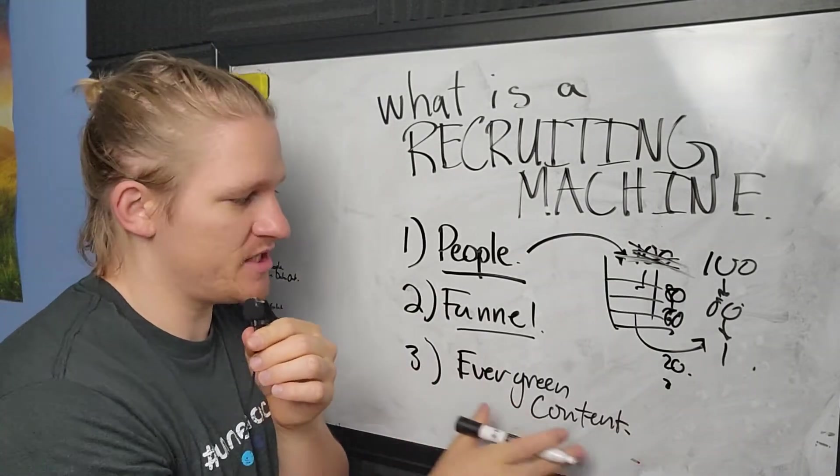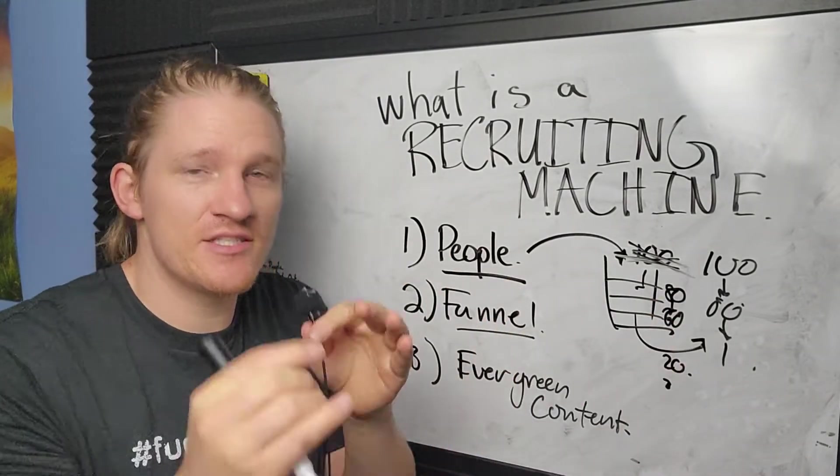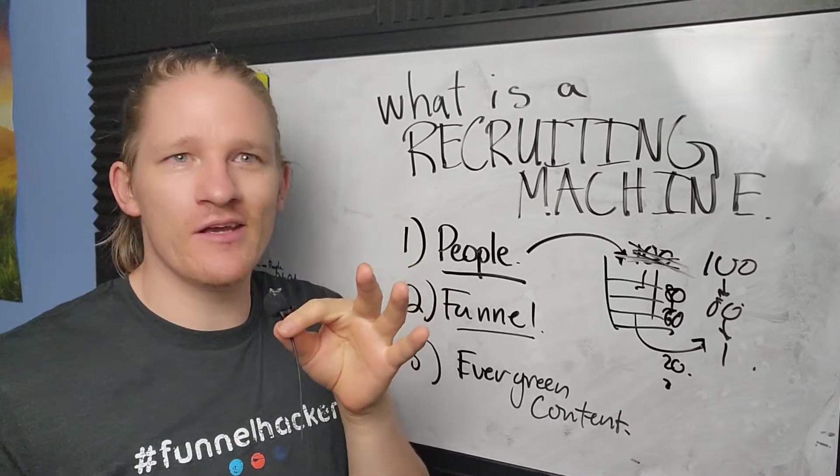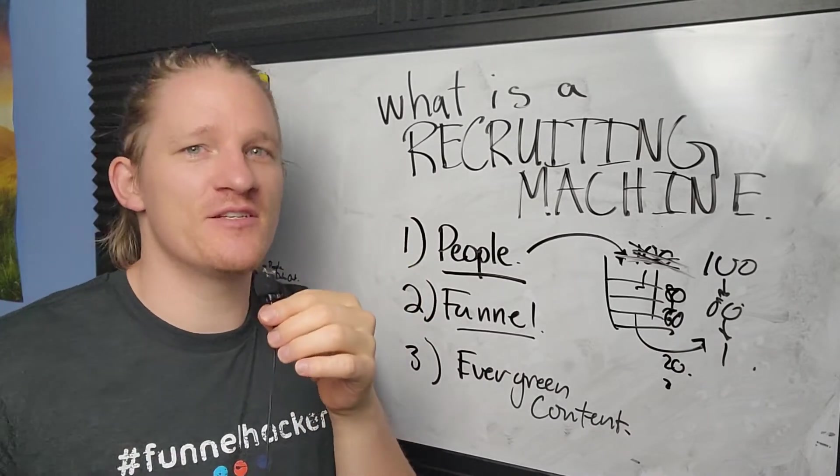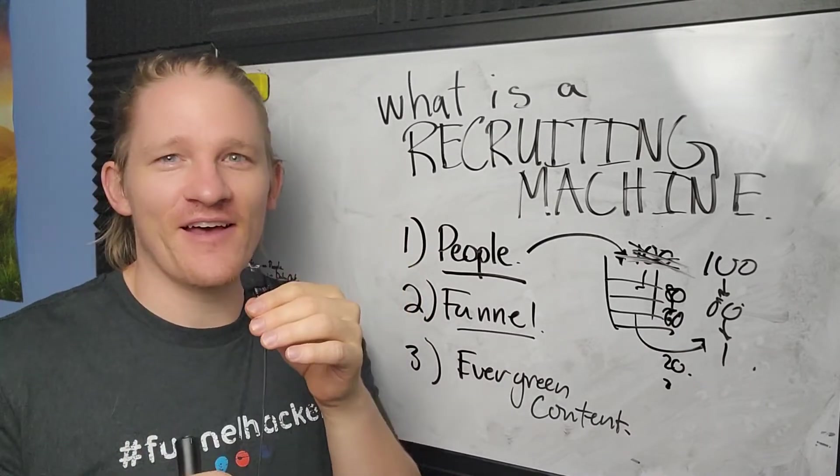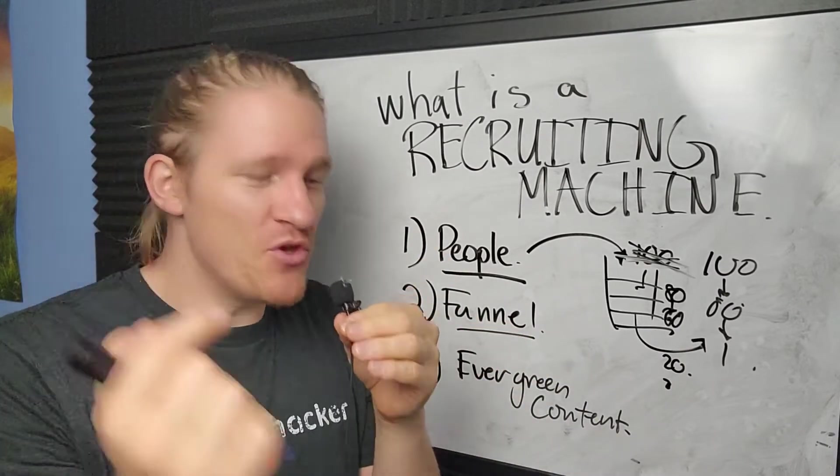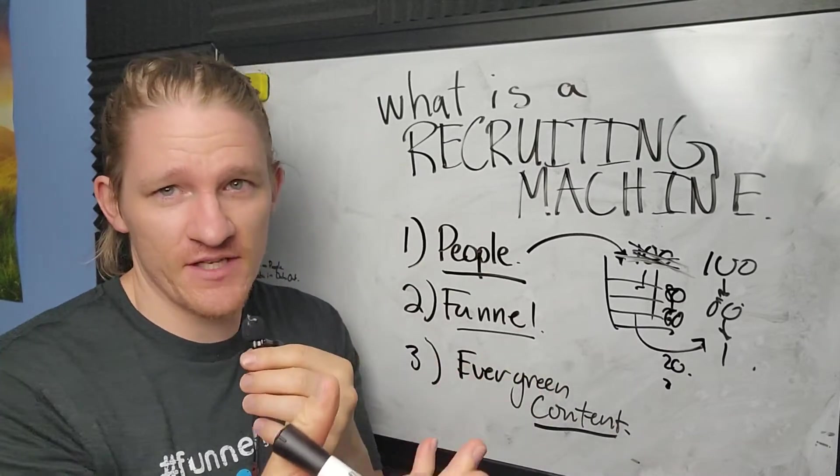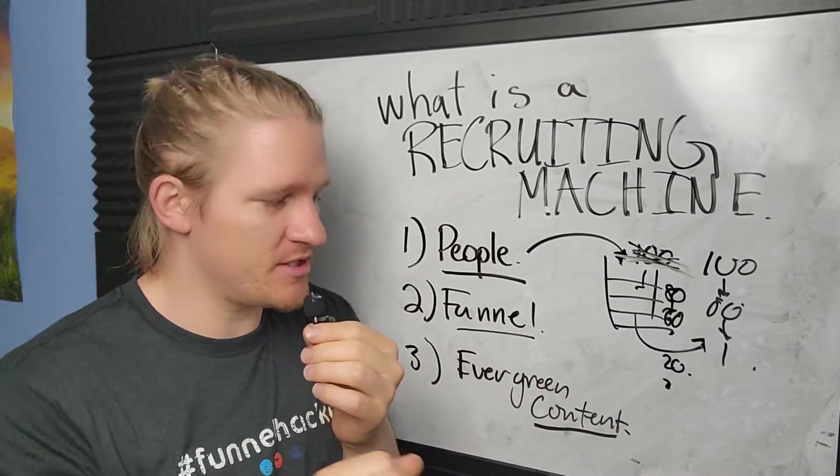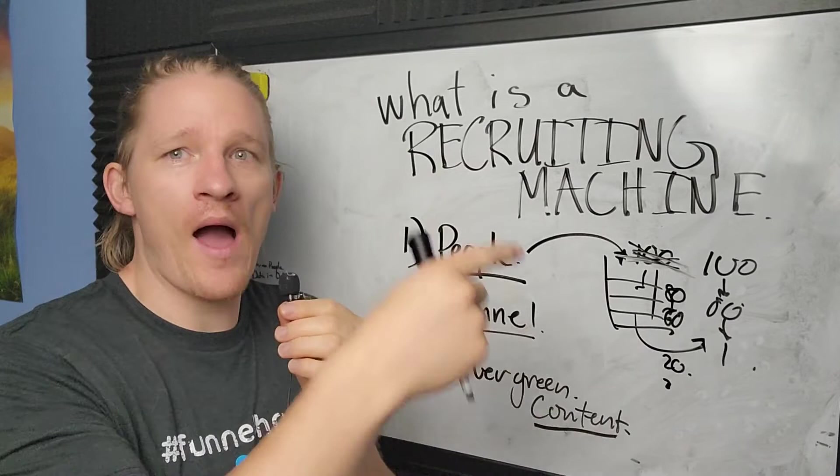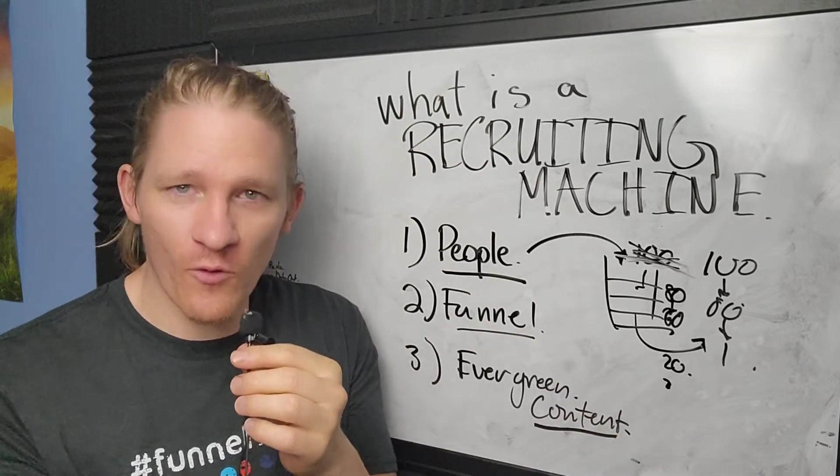Number three, evergreen content. If you're not familiar with what evergreen is, just think of like a tree. It's green year round. Think of a Christmas tree. That's why they chose pine trees or spruce trees. They're green all year round. You can produce content in very specific types of content out there. I'll show you in just a second that will go out and find the people for you.